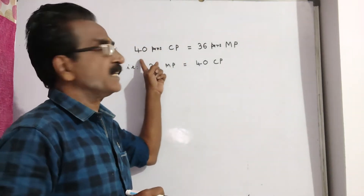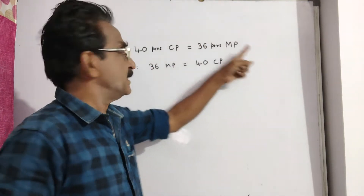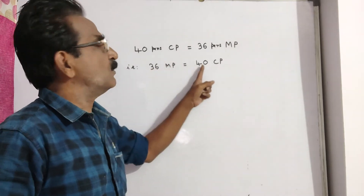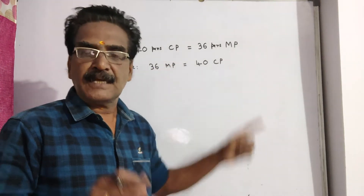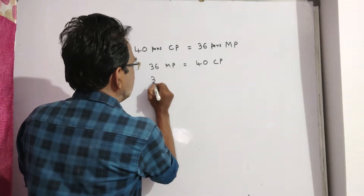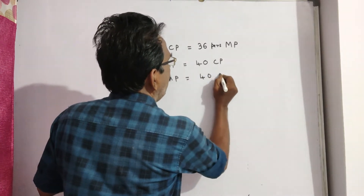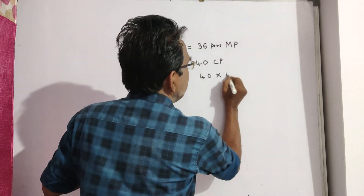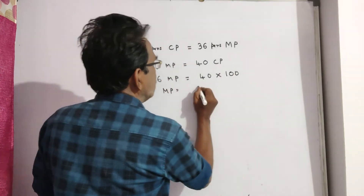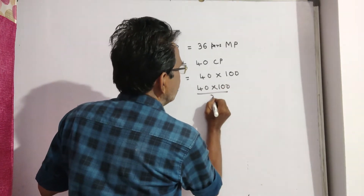It is given that 40 pens cost price is equal to 36 pens market price. This implies 36 pens market price is equal to 40 pens cost price. Now say cost price is 100. So market price is equal to 40 into 100 divided by 36.